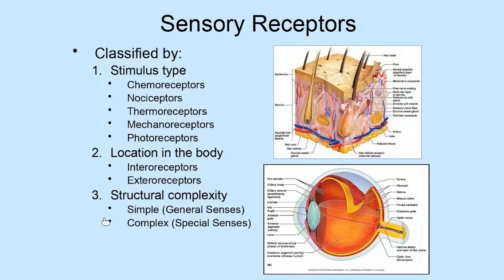Photoreceptors are found in one specific place in the body: the eye. A photoreceptor responds specifically to light — they are activated by light.